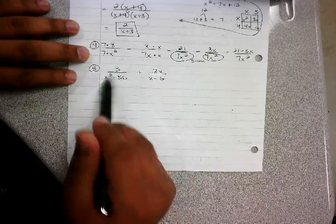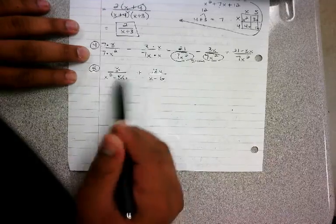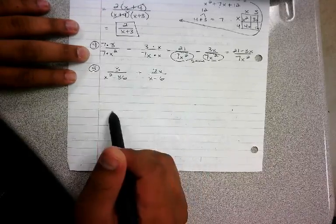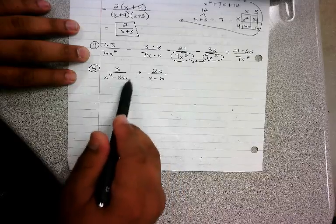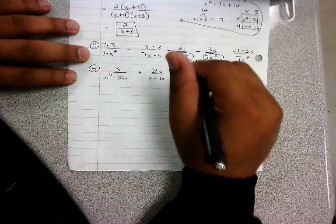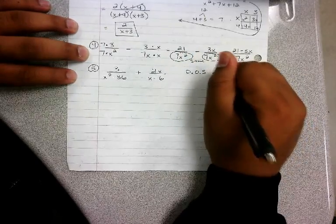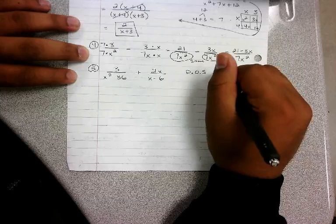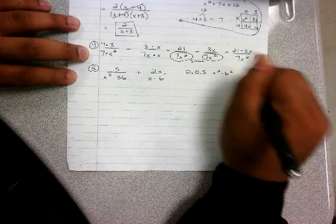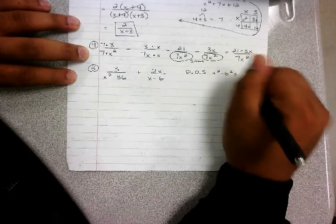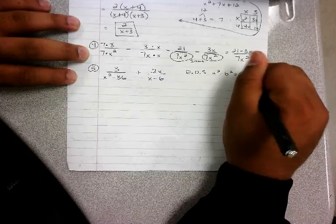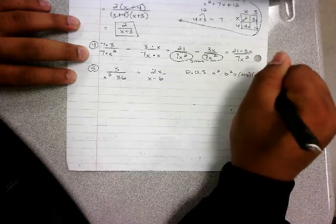First thing we need to do is look at the denominators - they're not the same, so we got to figure out how to get them the same. I'm gonna factor this out. Remember your difference of squared rules - you have a squared minus b squared, that equals a plus b times a minus b.